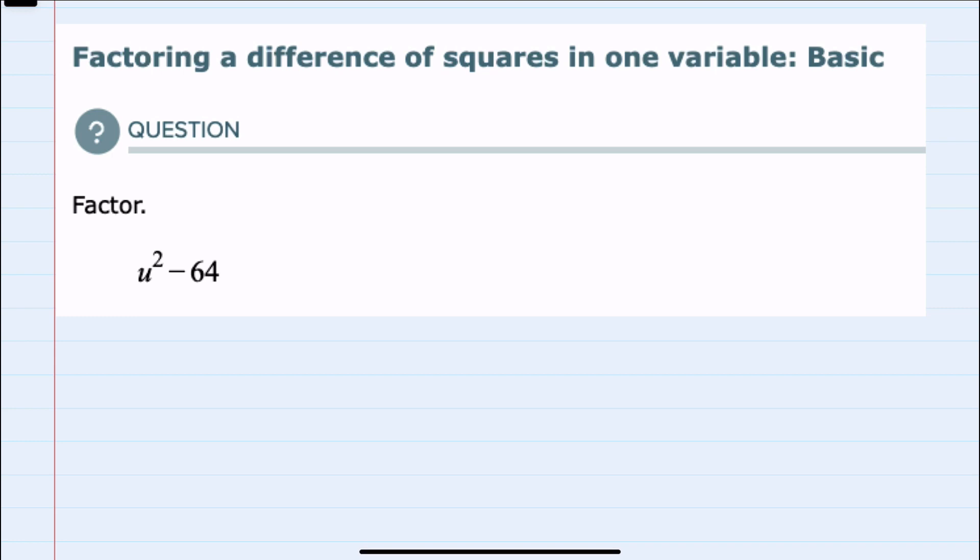And knowing that we're going to use the difference of squares, I'll recall that that says that a squared minus b squared equals a minus b times a plus b.